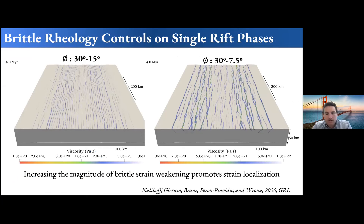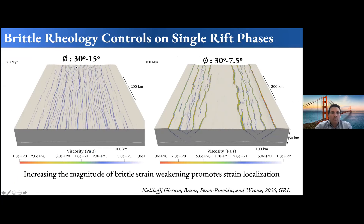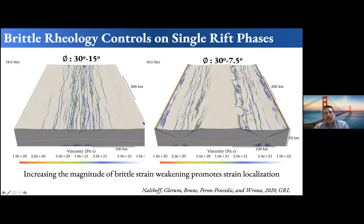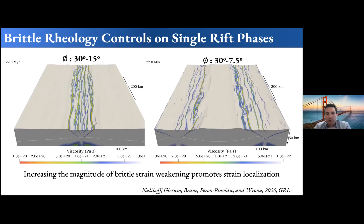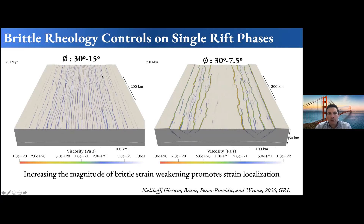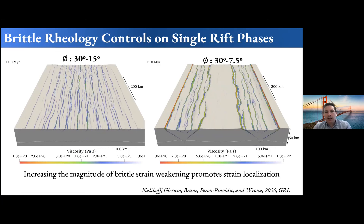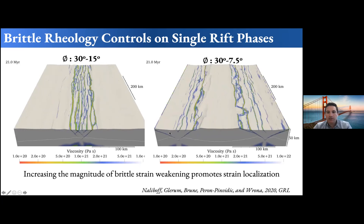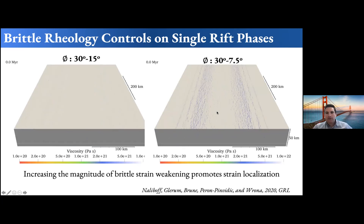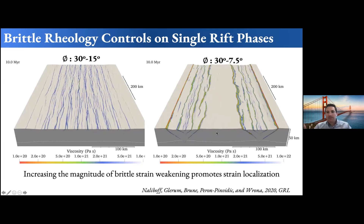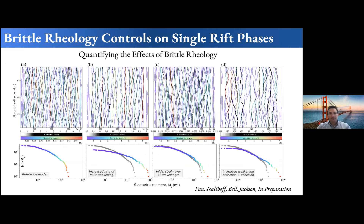These two images show continental rifting models where on the left we weaken the friction angle from 30 to 15 degrees over time, and on the right from 30 to 7.5 degrees. There are initial plastic strain perturbations to help localize deformation in the model center. The key takeaway is that as you increase the magnitude of brittle strain weakening — a two-times weakening versus a four-times weakening — it promotes strain localization. You go from more distributed rifting to a completely different structural style with two distinct rift basins, fewer faults, and highly localized deformation.